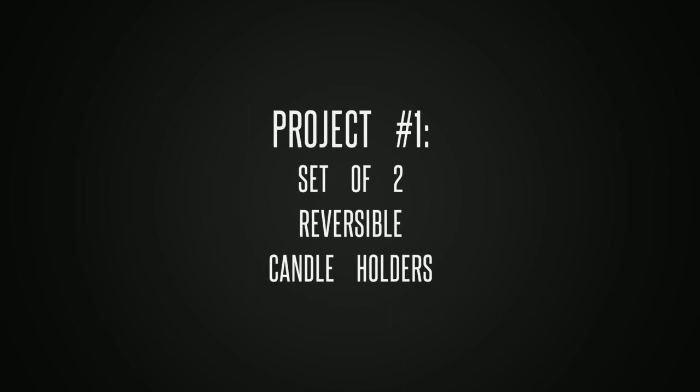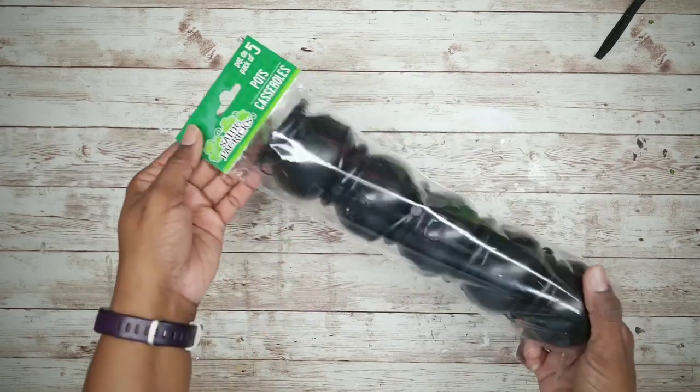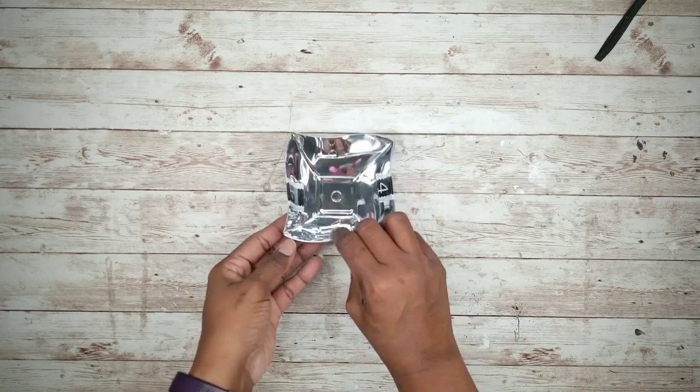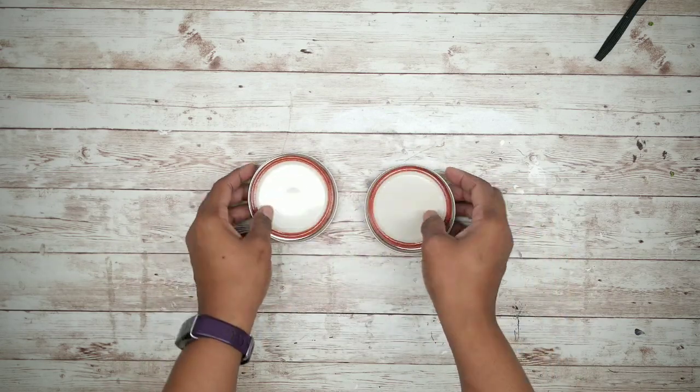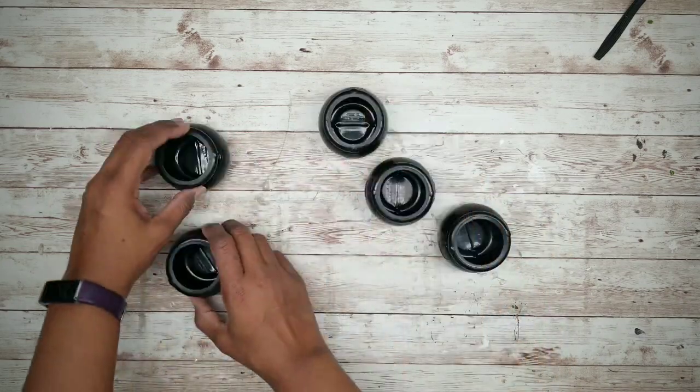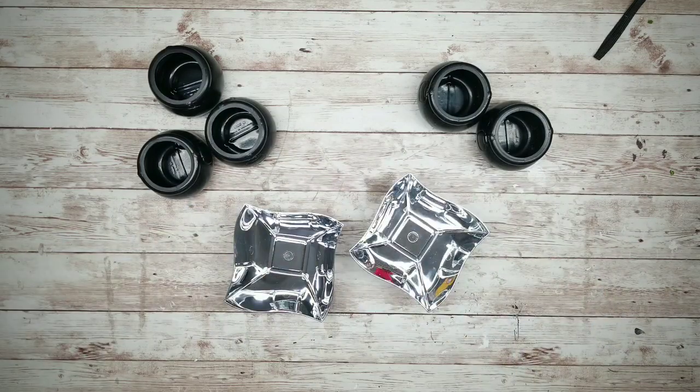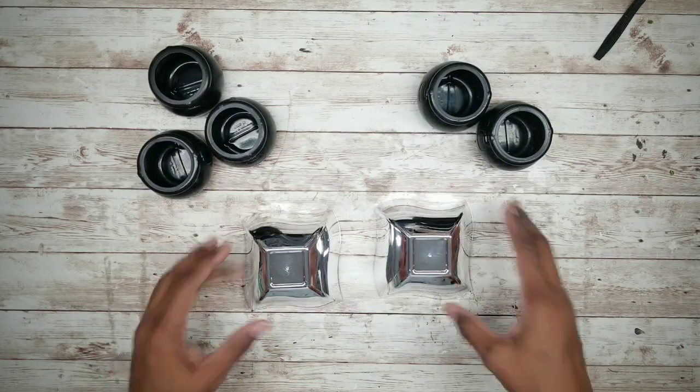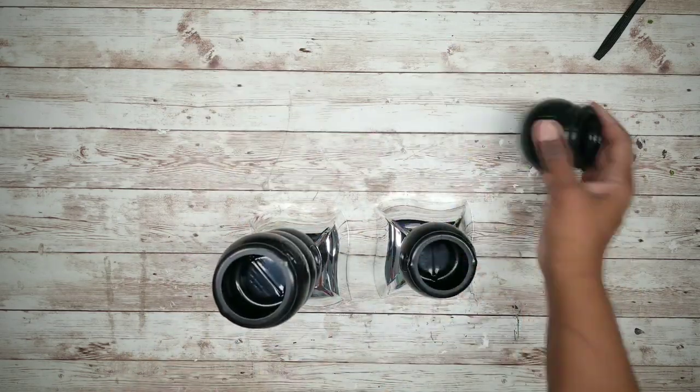Now the first project will be a two-piece set of reversible candle holders. For this project, we will need a package of these mini St. Patrick's pots, two of these silver bowls, and two of these mason jar lids. The first thing we want to do is remove the pots from the packaging and carefully cut off the handles that come on them. And then we're going to grab two of these silver bowls. Now we will be adhering the pots to the bottom of the silver bowl as shown here. We'll use three pots on one and two pots on the other.